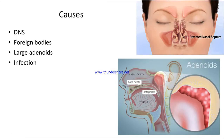Causes: number one is deviated nasal septum. Normally our nasal septum is straight, but in some patients it is deviated — you can see the deviation in the diagram. This is one of the causes for nasal obstruction.